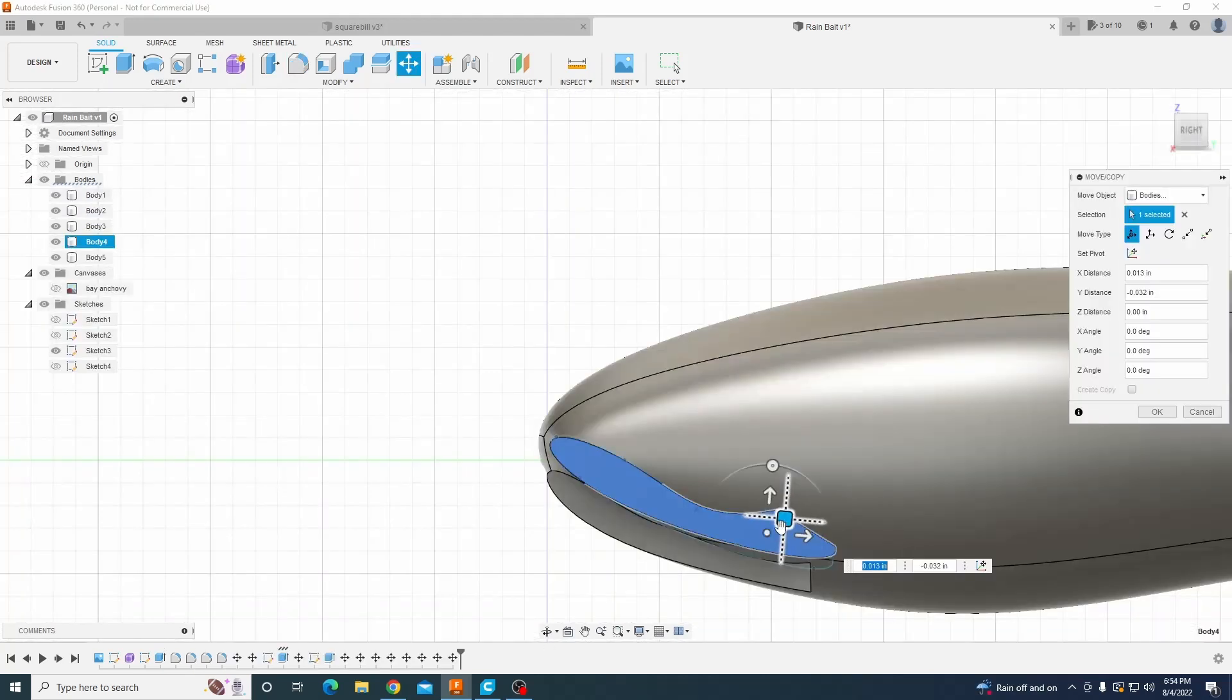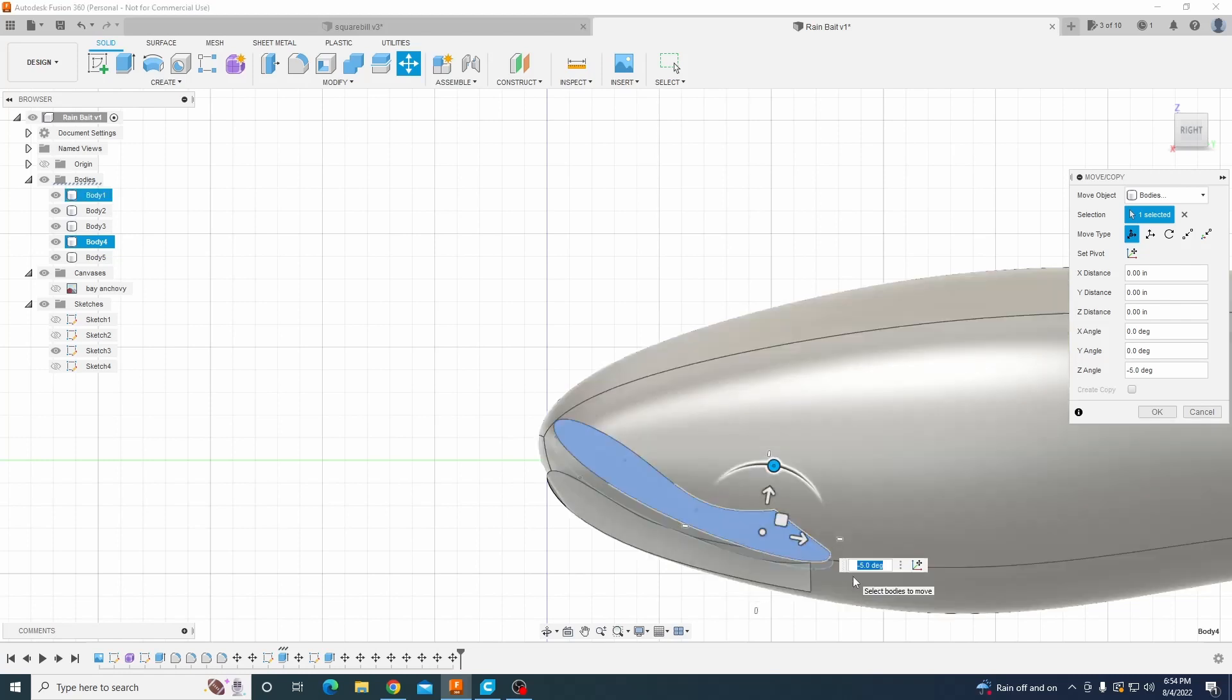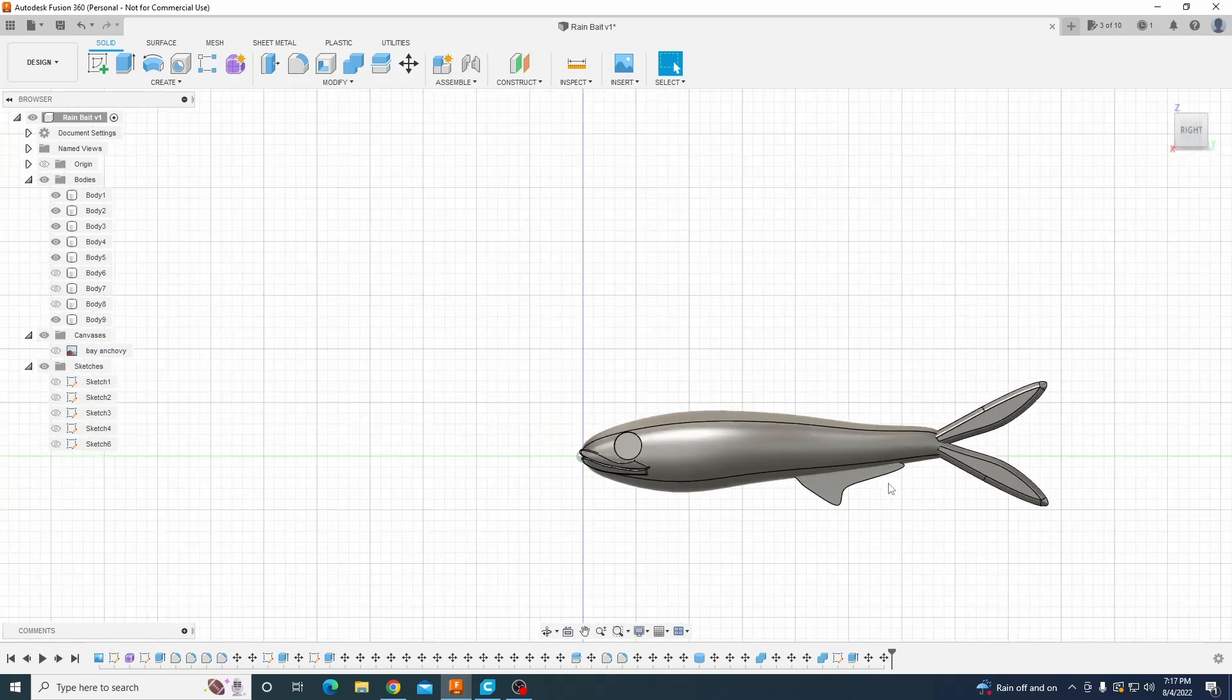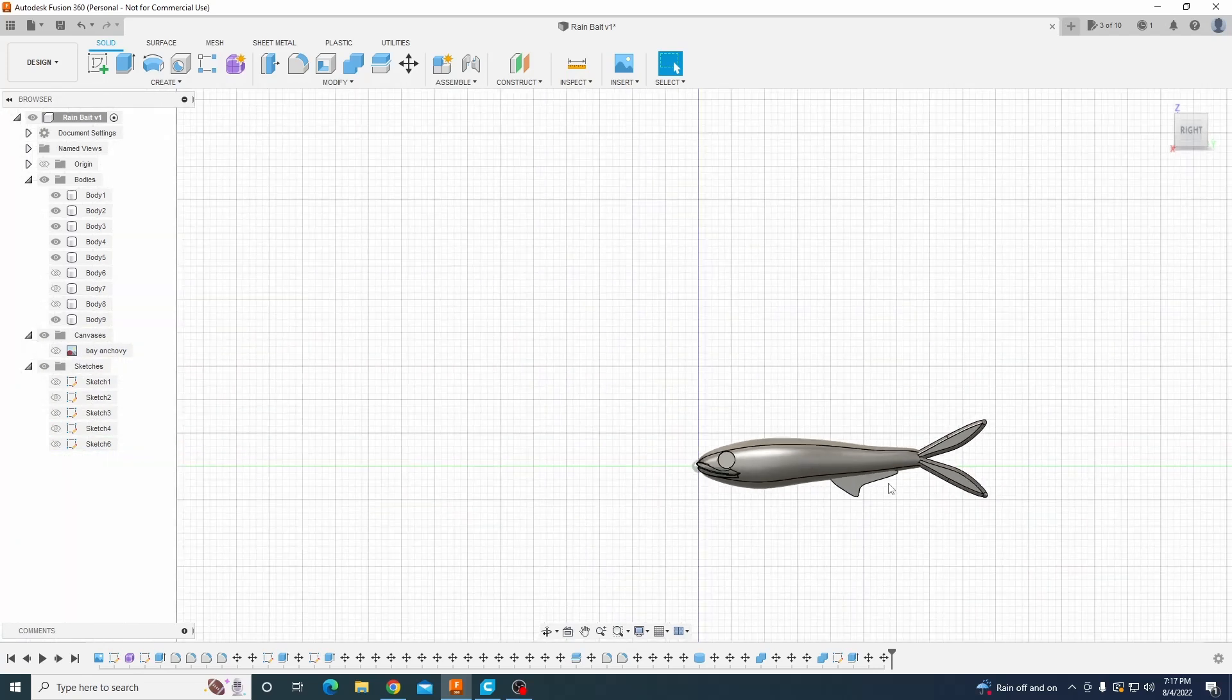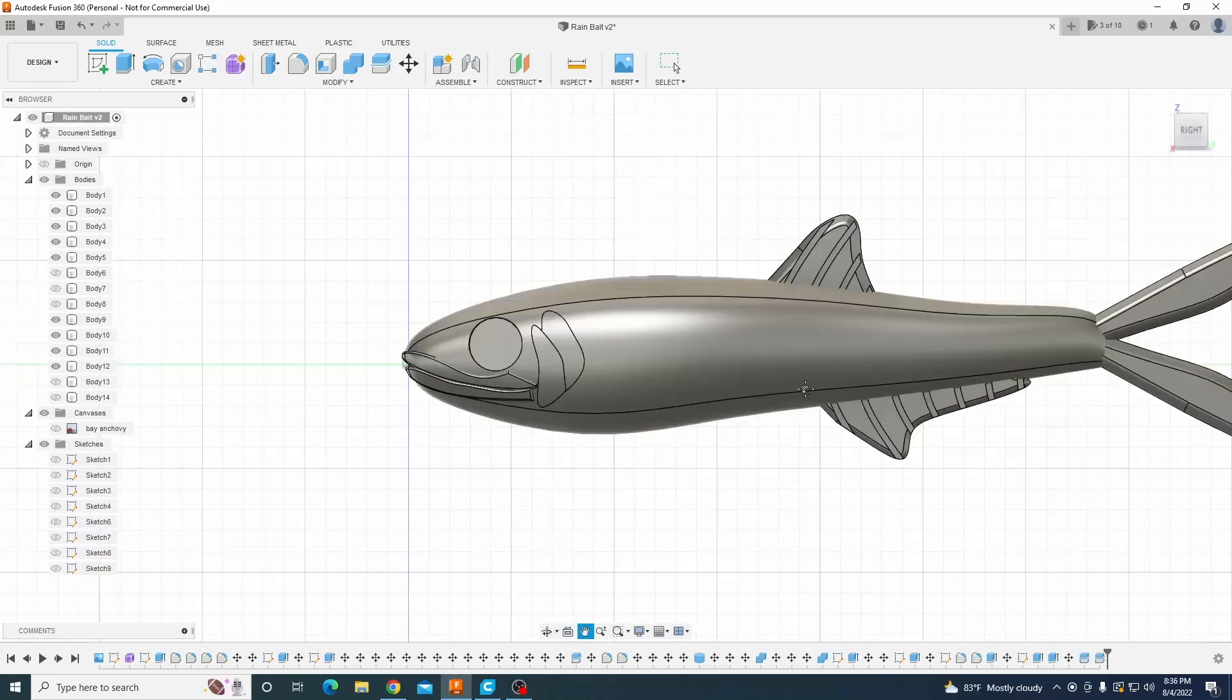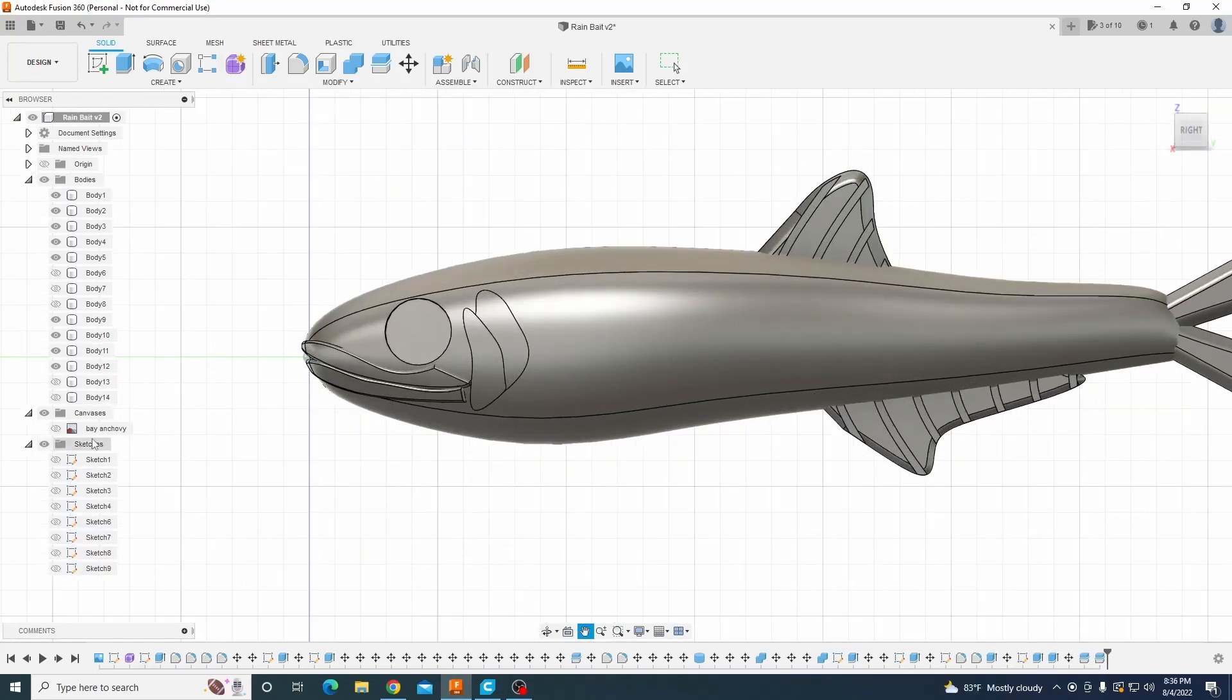Now the bay anchovy goes up and down the entire eastern seaboard of the United States, so it should really work all over the place. I'm sure it would make a great imitation of something else on the west coast or anywhere else in the world. It would probably even work as a larger freshwater bait even for bass. I mean it's still a general fish design even though it's not designed after a freshwater fish.